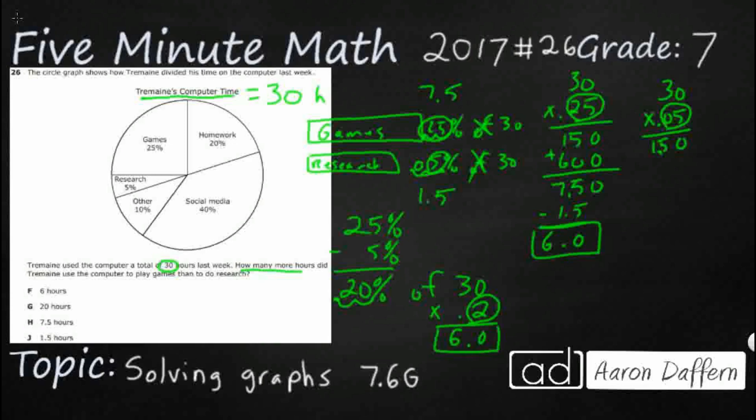So if you want, you could find the 25% of 30, the 5% of 30 and subtract those two like we did here. Or you can go ahead and subtract them on the front end, get your 20% and multiply that. Either way, you are going to get the exact same answer of 6.0 or we will just call it 6 hours.